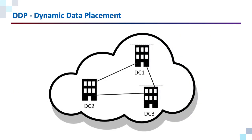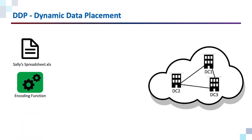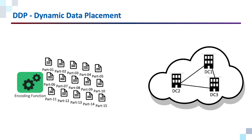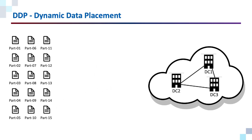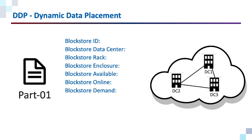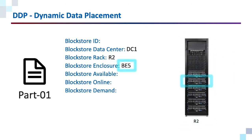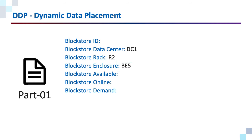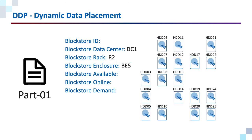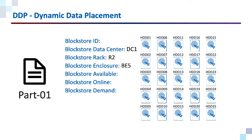Now let's step through the logic. A file comes into ActiveScale, the file gets erasure encoded — in this case into 15 parts. Let's take a look at one of these parts. Storage policy will tell us the data center, it will also tell us the preferred rack, and in some cases the most preferred storage enclosure. Inside that storage enclosure there are some number of block stores. So how does DDP decide the most preferred block store for this object part?